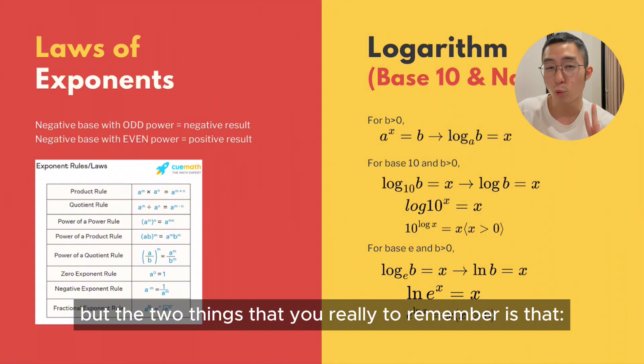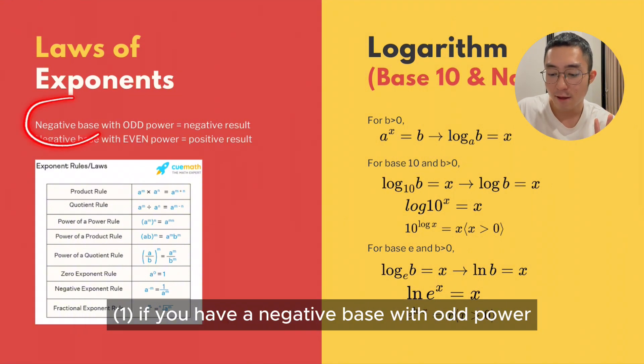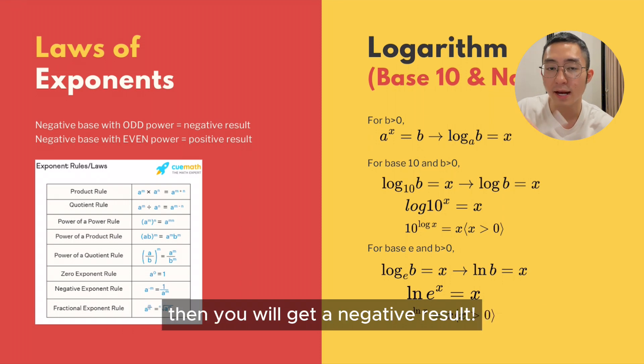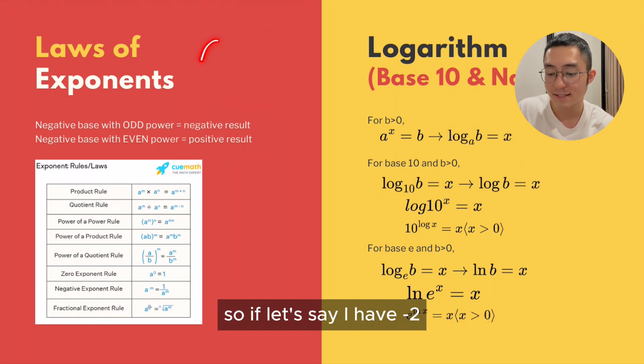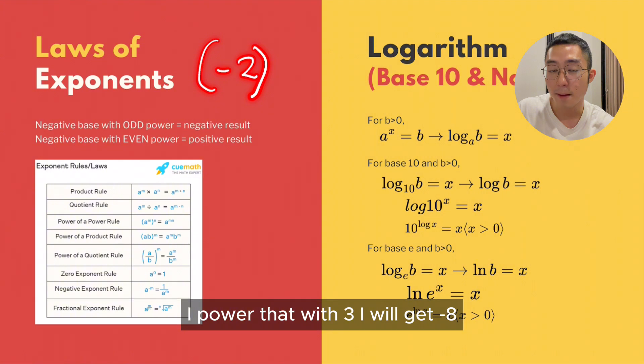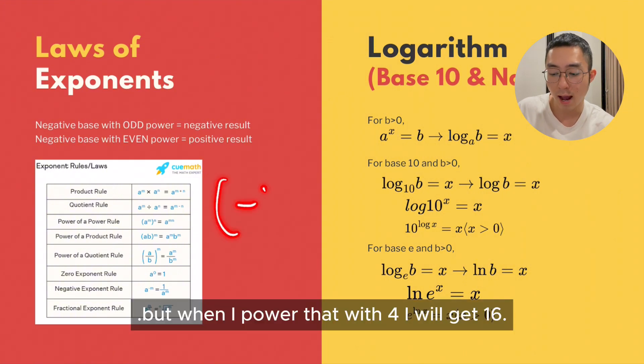The two things that you really need to remember is that if you have a negative base with odd power, then you will get a negative result. And if you have a negative base with an even power, you will get a positive result. So if I have minus 2 powered with 3, I will get minus 8. But when I power that with 4, I will get 16.